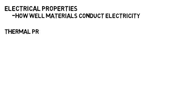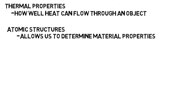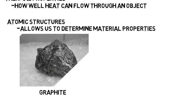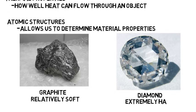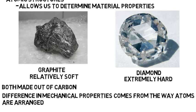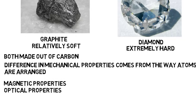You'll also learn electrical properties, like how well materials conduct electricity, and thermal properties — how well heat can flow throughout an object. You'll learn atomic structures and bonding within these materials, which is very important because those structures allow us to determine a material's properties. For example, take graphite versus diamond: graphite is relatively soft while diamond is extremely hard, yet both are made out of carbon. This difference in mechanical properties comes from the way the atoms are arranged. There are also magnetic and optical properties, but this is the general idea.